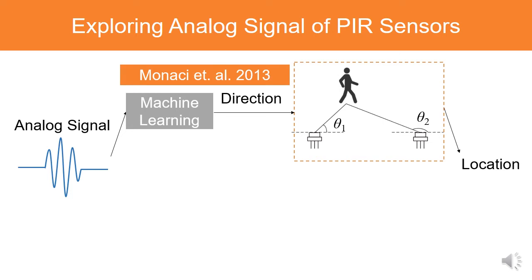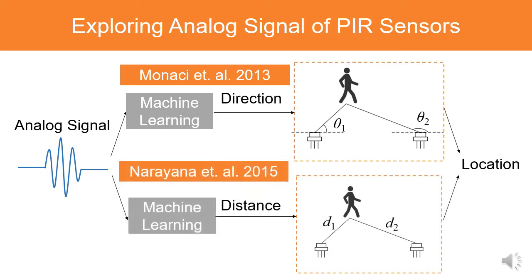To reduce the deployment density, a new trend is to deeply explore the analog signal of PIR sensors. Some researchers propose utilizing a machine learning model to map the amplitude of a PIR sensor's analog signal to the direction of a person for localization. Similarly, another method maps the amplitude to the distance of a person. Although these two methods start a new trend, they both utilize a data-driven model and therefore require a high cost of training in practice.